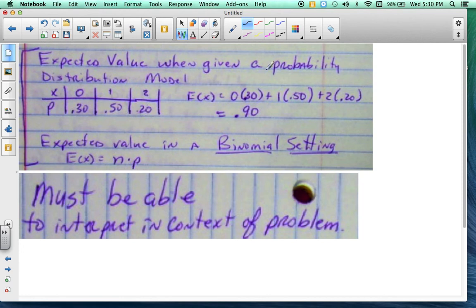Expected value when you give a probability distribution model. Notice it's 0 times 0.30, 1 times 0.50, so on and so forth. You get 0.90. Now, if it's in a binomial setting, you just do n times p. Now remember, you must be able to interpret in the context of the problem, so make sure you know what the expected value means.